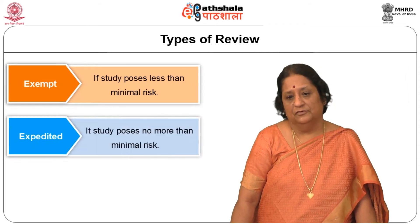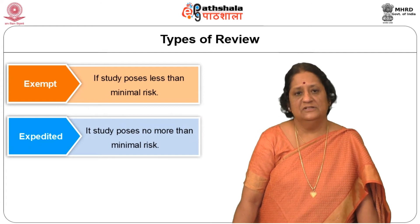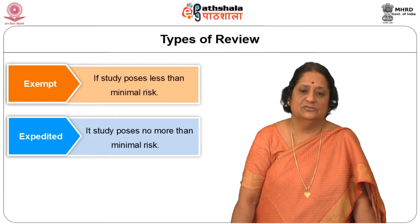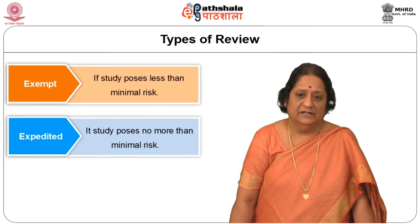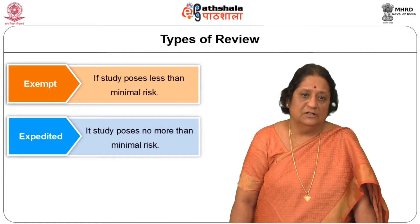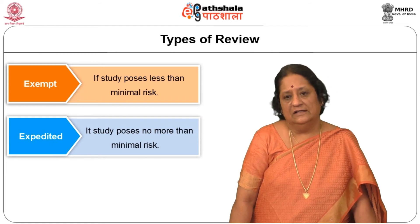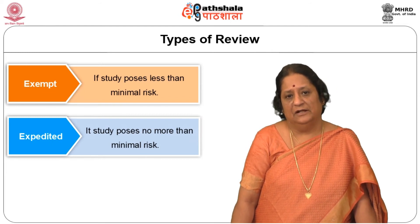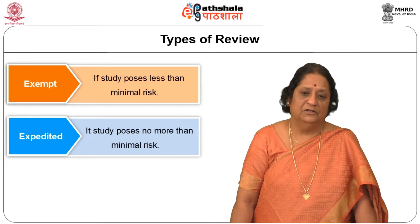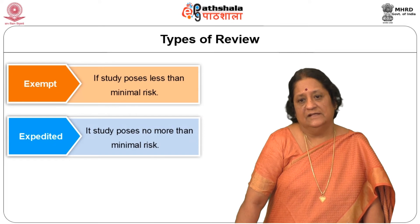The second category is expedited review. When the committee meeting is held once in two or three months and you want to do a simple study with no risk to patients — just looking at data or collecting samples where no individuals are directly involved — and you want an early approval, you can submit for expedited review. There is a procedure given in the ICMR guidelines on how a subcommittee of the main committee will go through the proposal and give approval quickly, and then the main committee will be informed later.